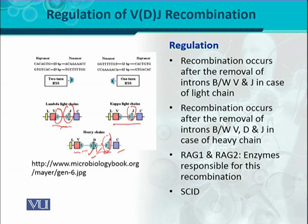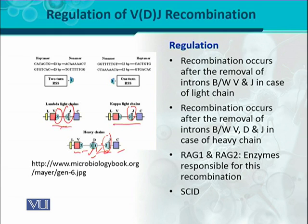Similarly, RAG1 and RAG2 are also involved in the maturation of T cells and the T cell receptors (TCR). In such a way, V, D, and J recombination is regulated. Thank you.